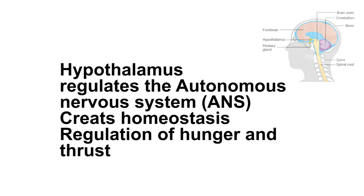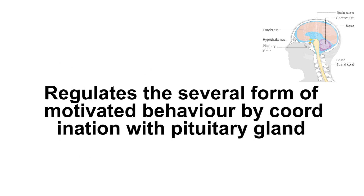The hypothalamus is an extremely complex part of the brain which contains highly specialized function-related regions. It regulates the autonomic nervous system and also creates balance in the body's internal environment, which is known as homeostasis. The role of the hypothalamus in regulating hunger and thirst is extensively studied. For regulation of these activities, the hypothalamus coordinates with the pituitary gland and regulates several forms of motivated behavior.